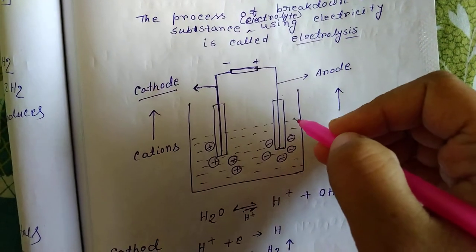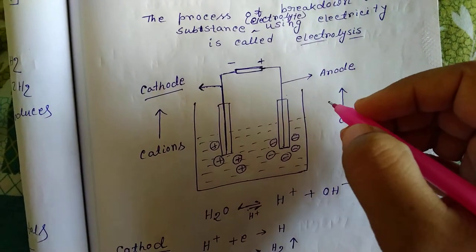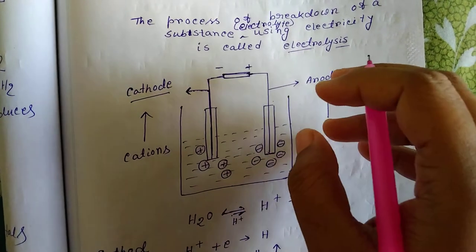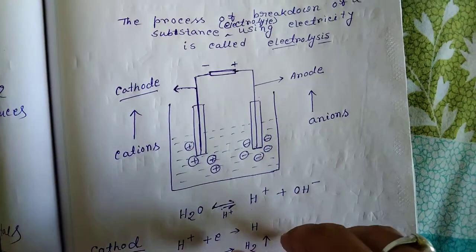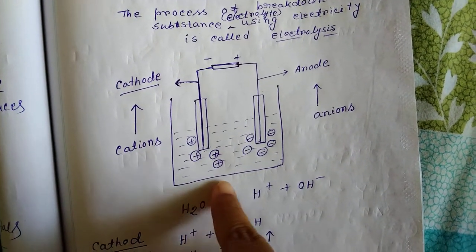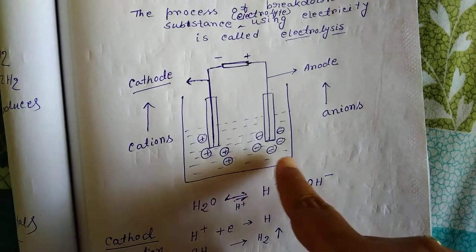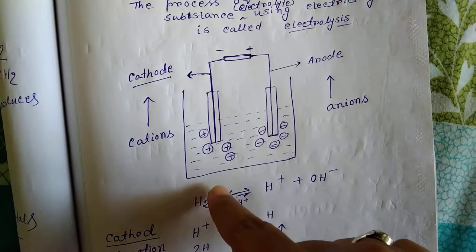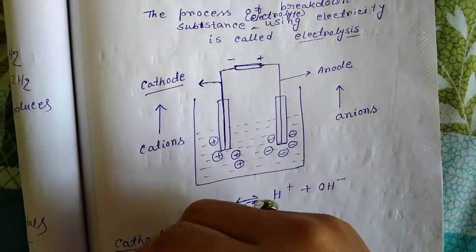When passing electricity to water, you already know that pure water is a bad conductor of electricity, so we add a few drops of acid to make the water a good conductor. So here we use acidic water as an electrolyte and we use a battery as the source of electricity.